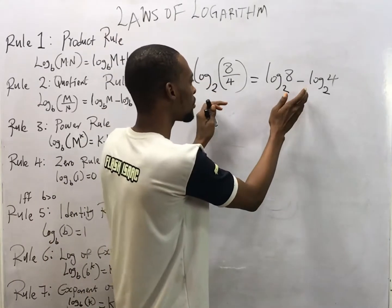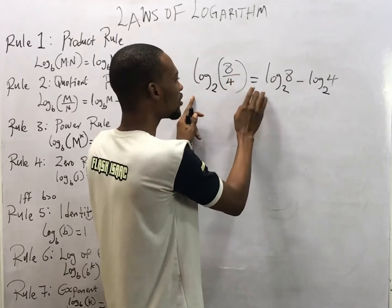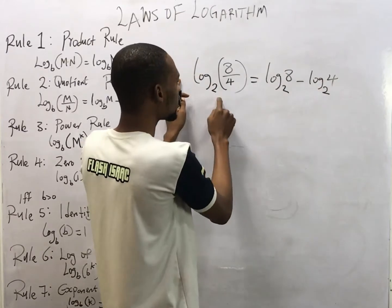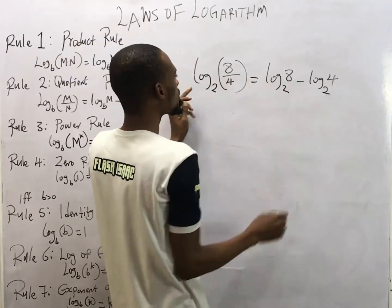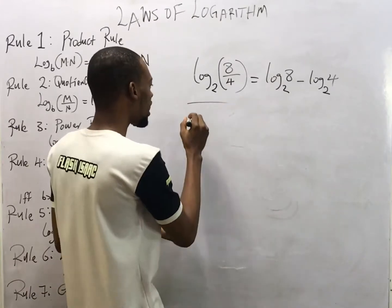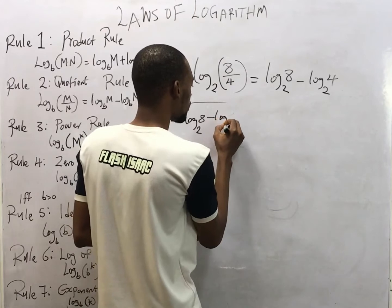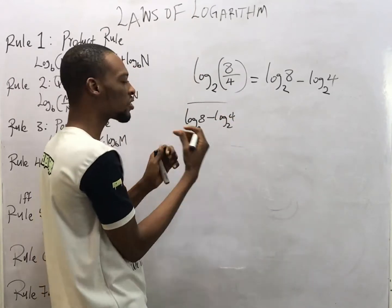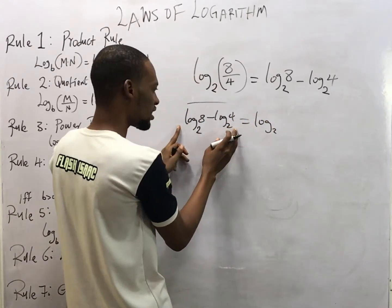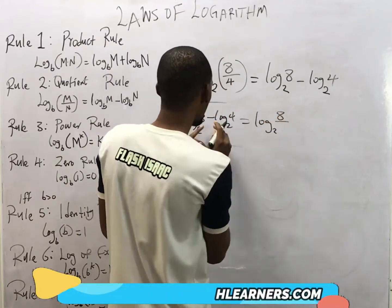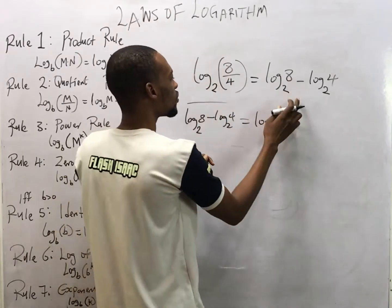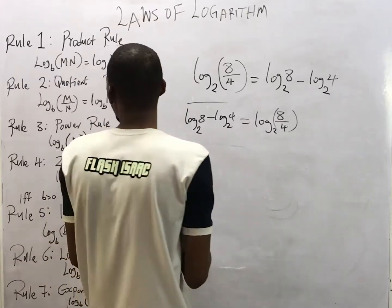So log base 2 of (8/4) is the same as log base 2 of 8 minus log base 2 of 4. If you solve either form you get the same answer. The reverse also applies: if given log_2(8) minus log_2(4), you can convert it to log_2(8/4) by dividing the arguments. That's the quotient rule, the second law of logarithm.